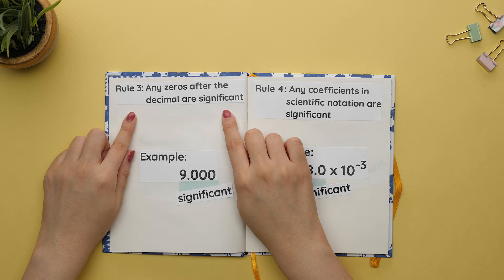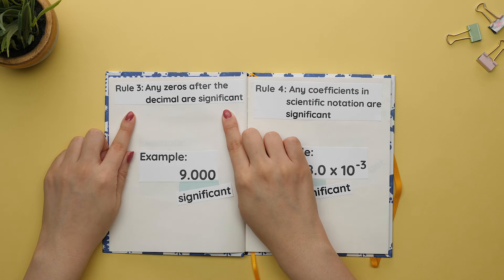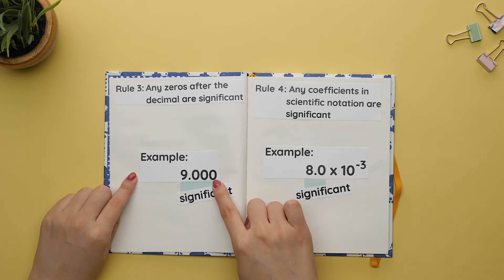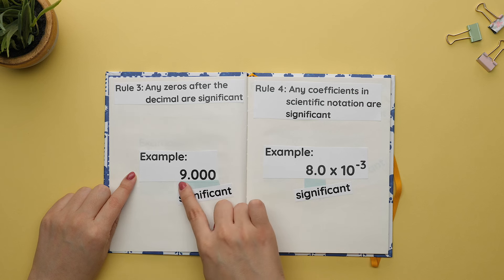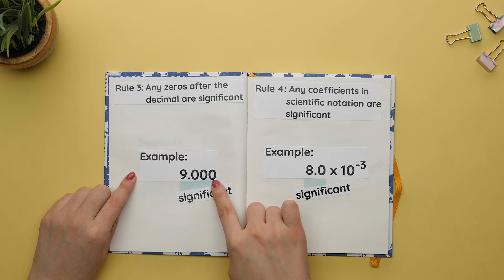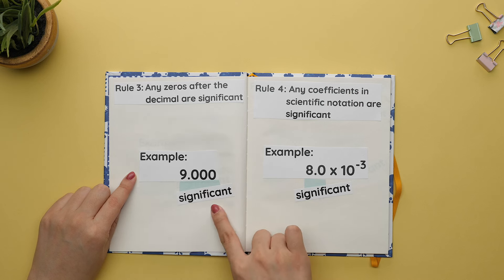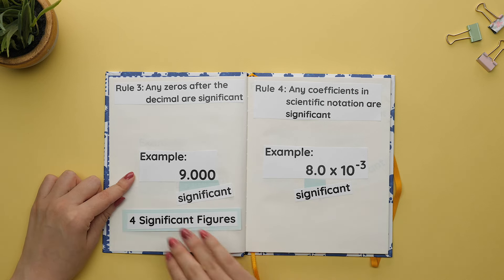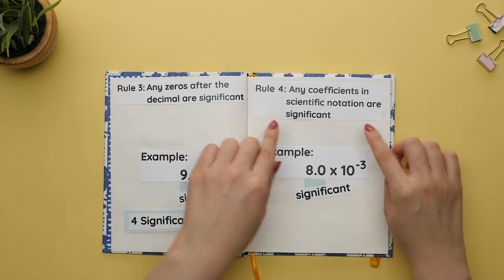Rule three: any zeros after the decimal are significant. In this case, there are three zeros after the decimal, so these count as significant. All these numbers count as sig figs. There are four significant figures.